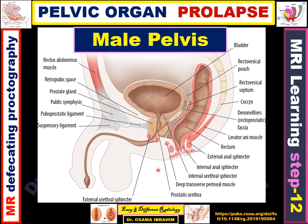Returning to the sagittal view of the male pelvis, this is the rectum and this is the anorectal junction and anus surrounded by the internal and external anal sphincters. This is the levator ani muscle. The urinary bladder shows the prostate and prostatic urethra passing through it. The urethral sphincter appears just distal to the prostate. This is the symphysis pubis and this is the region of the coccyx.